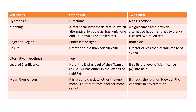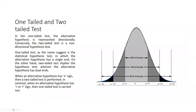For the alternate hypothesis: in a one-tailed test, it has either a greater-than sign or a lesser-than sign — meaning it is unidirectional. In a two-tailed test, the alternate hypothesis has a not-equal-to sign.